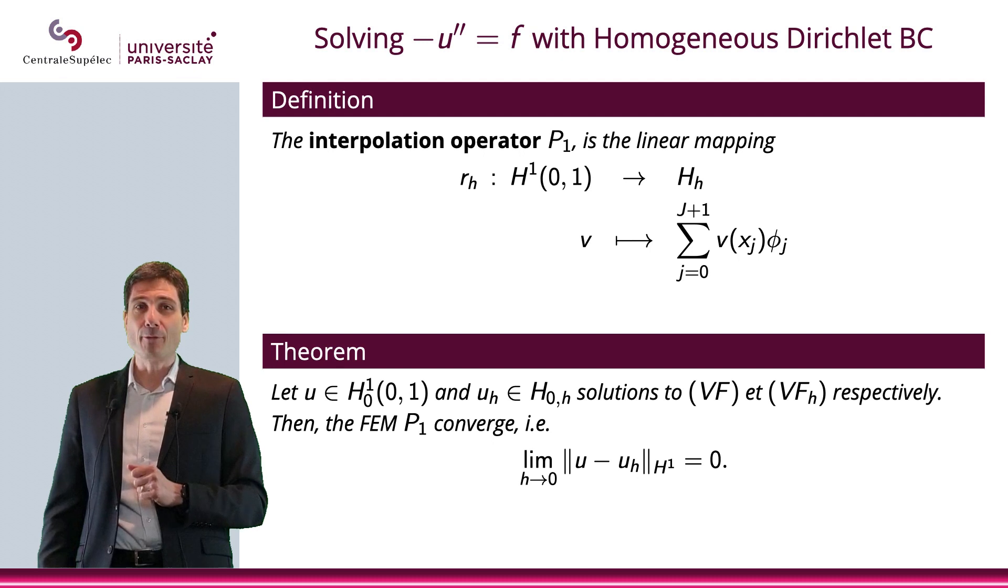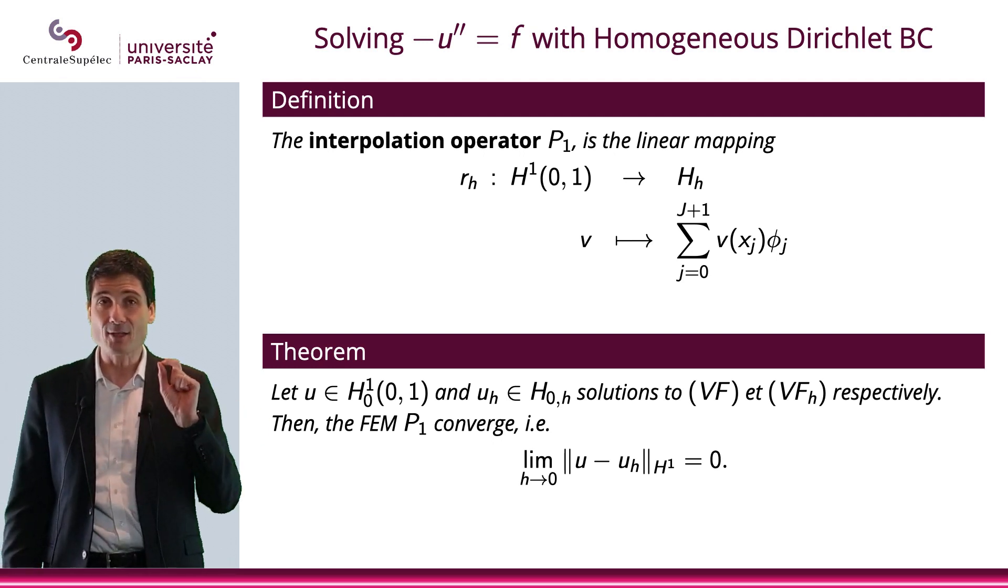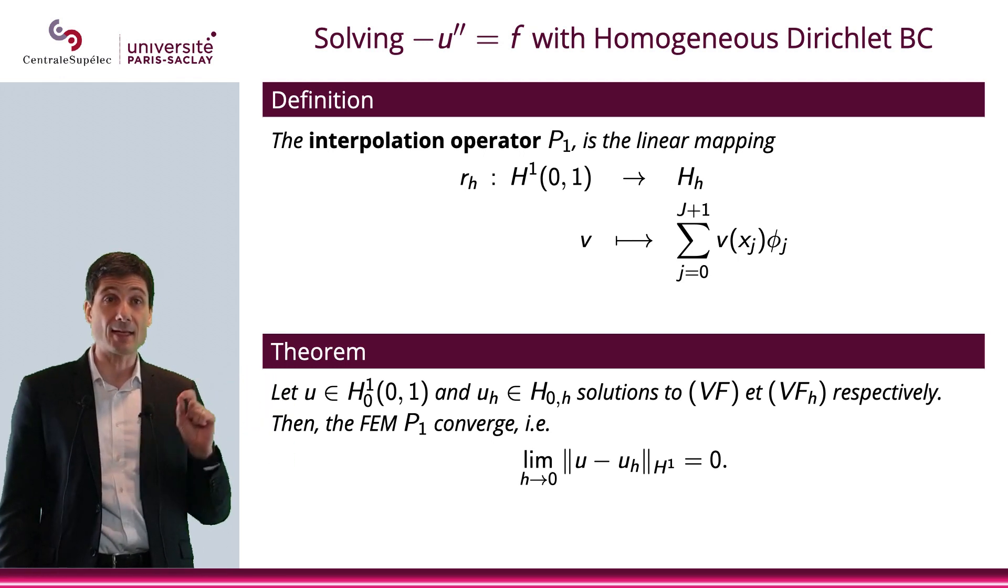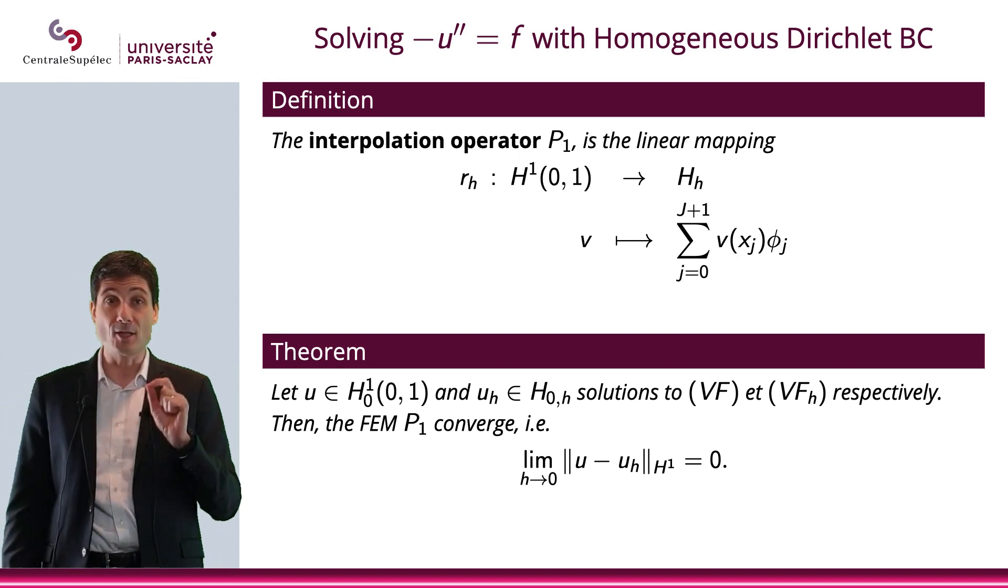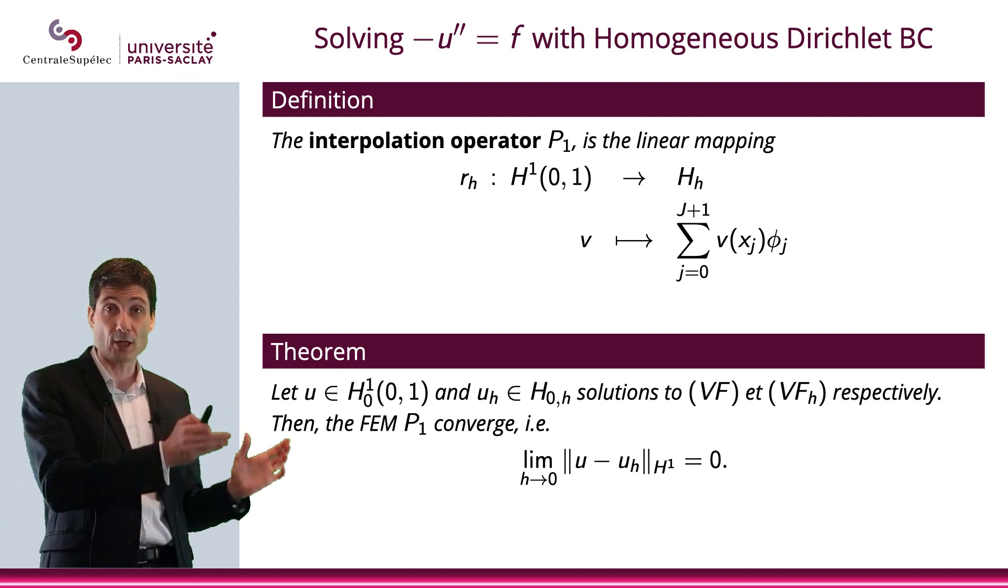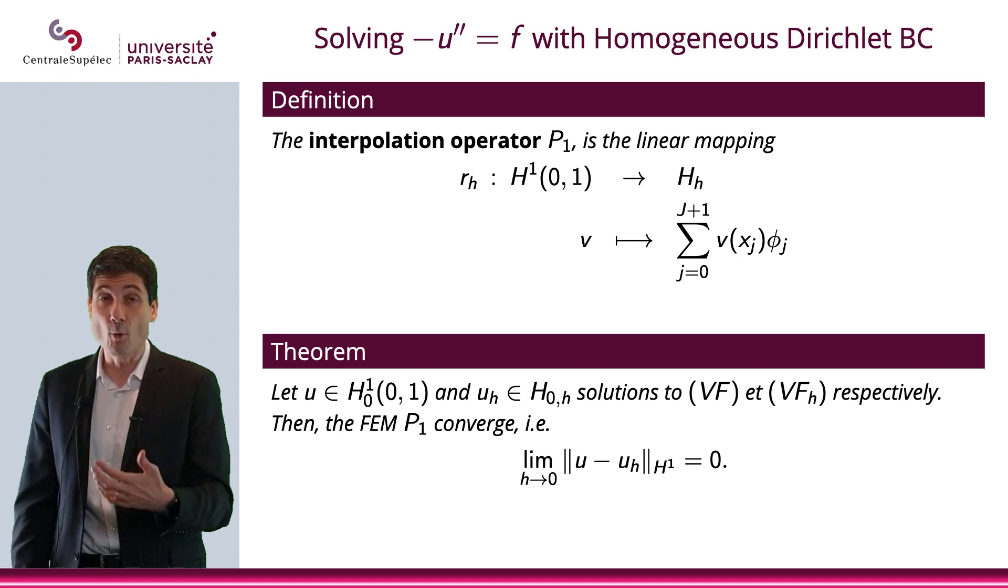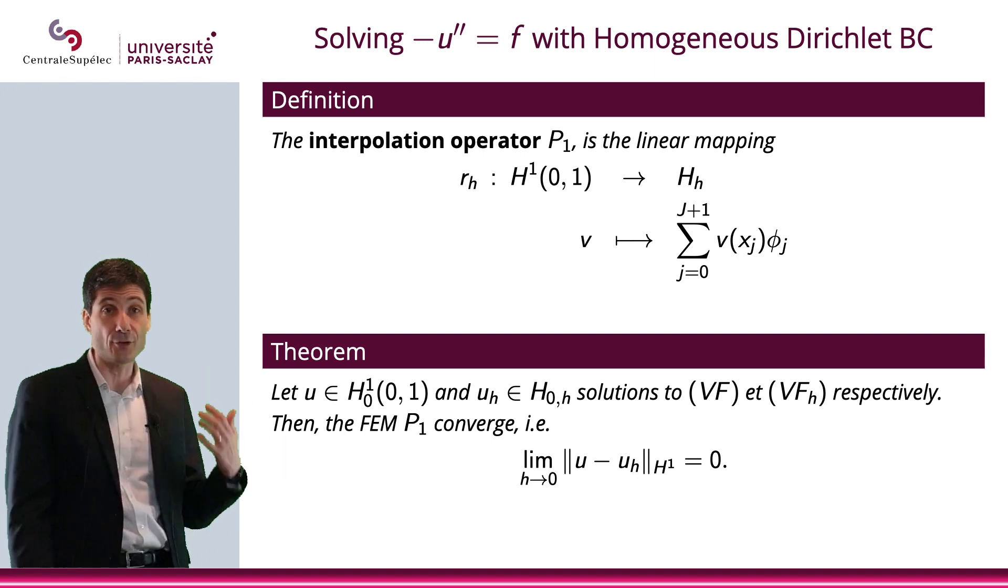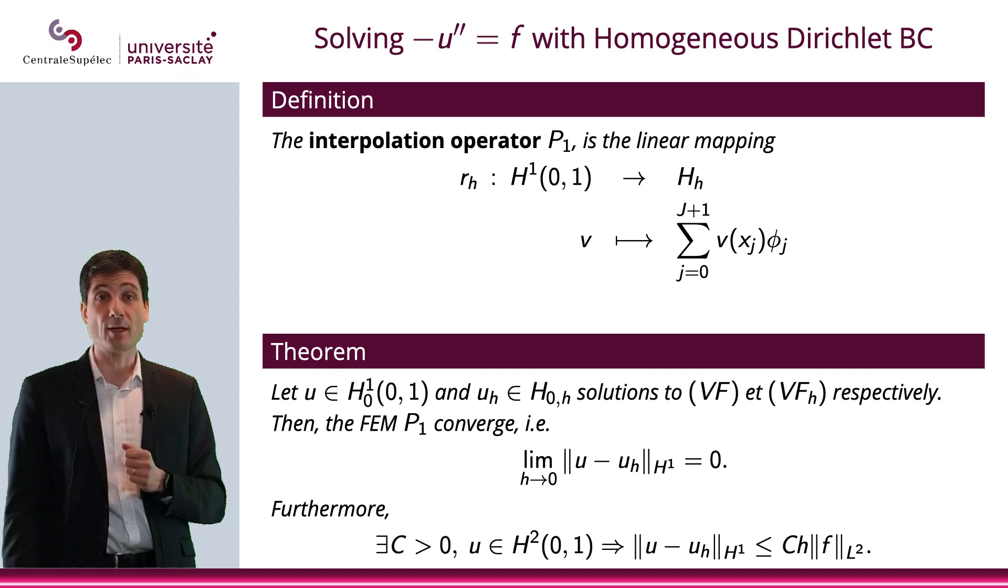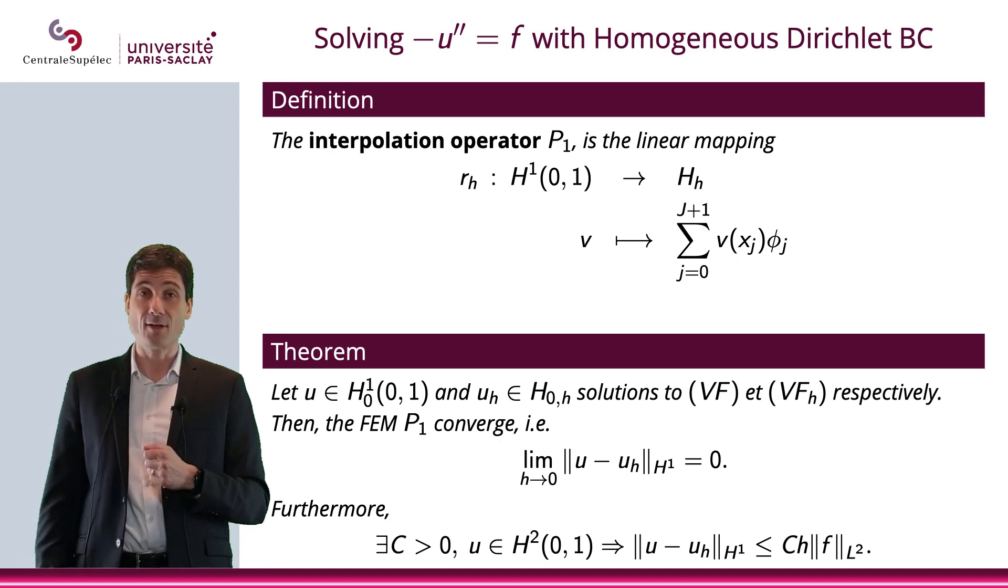Now, the interpolation operator P1 is going to be the linear mapping r_h that maps v to the sum of v(x_j)φ_j. And I'm going to sum this between 0 and J+1. And what I'm saying is that if u is in H^1_0 and u_h is in H_{0,h}, and there are solutions to VF and VF_h, which are the variational formulations posed in the subspace of dimension n_h, then the finite element method P1 will converge, which means that the limit of ||u - u_h||_{H^1} will go to 0. And furthermore, there exists a c such that u in H^2 implies ||u - u_h||_{H^1} is smaller than ch||f||_{L^2}.